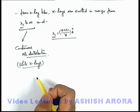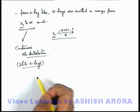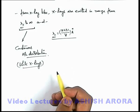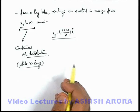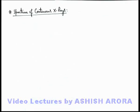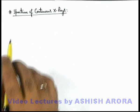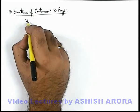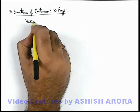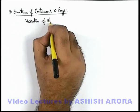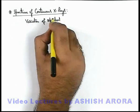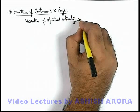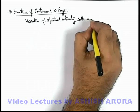On the next sheet we'll discuss the wavelength spectrum of continuous x-rays in which we'll study the variation of spectral intensity with the wavelength distribution. Let us discuss the spectrum of continuous x-rays. Here in the spectrum we're going to discuss the variation of spectral intensity